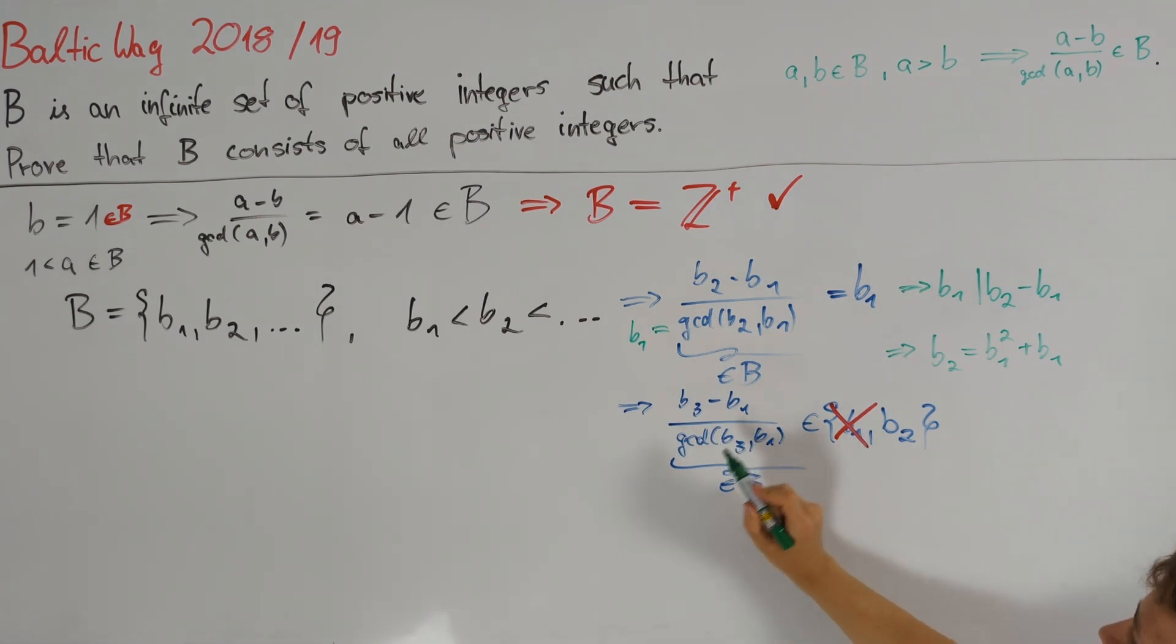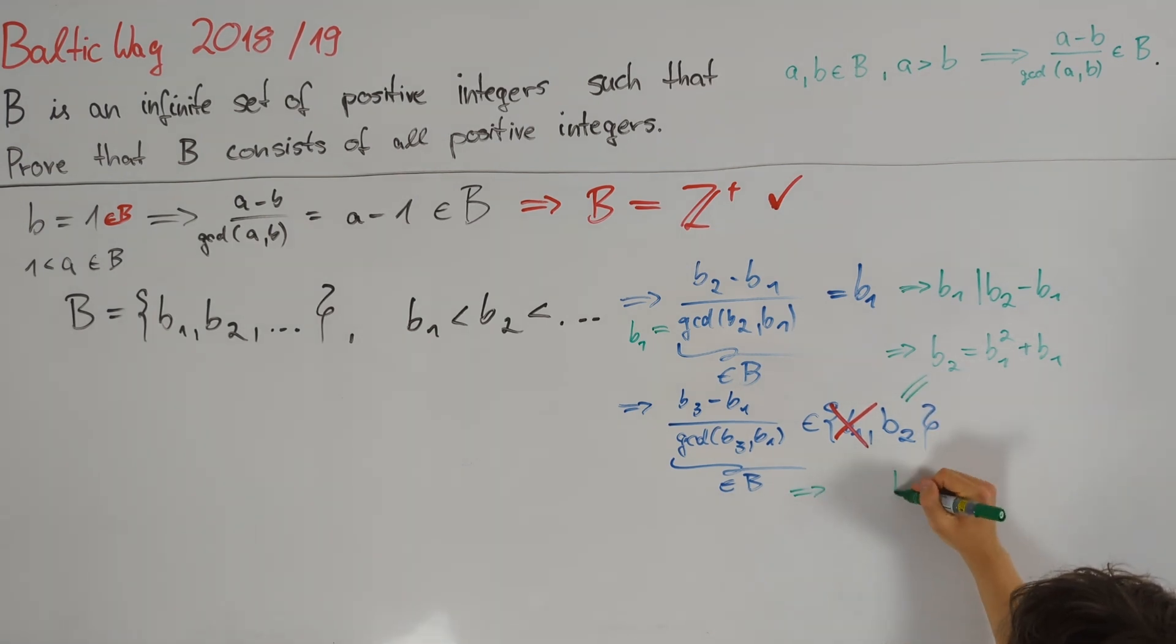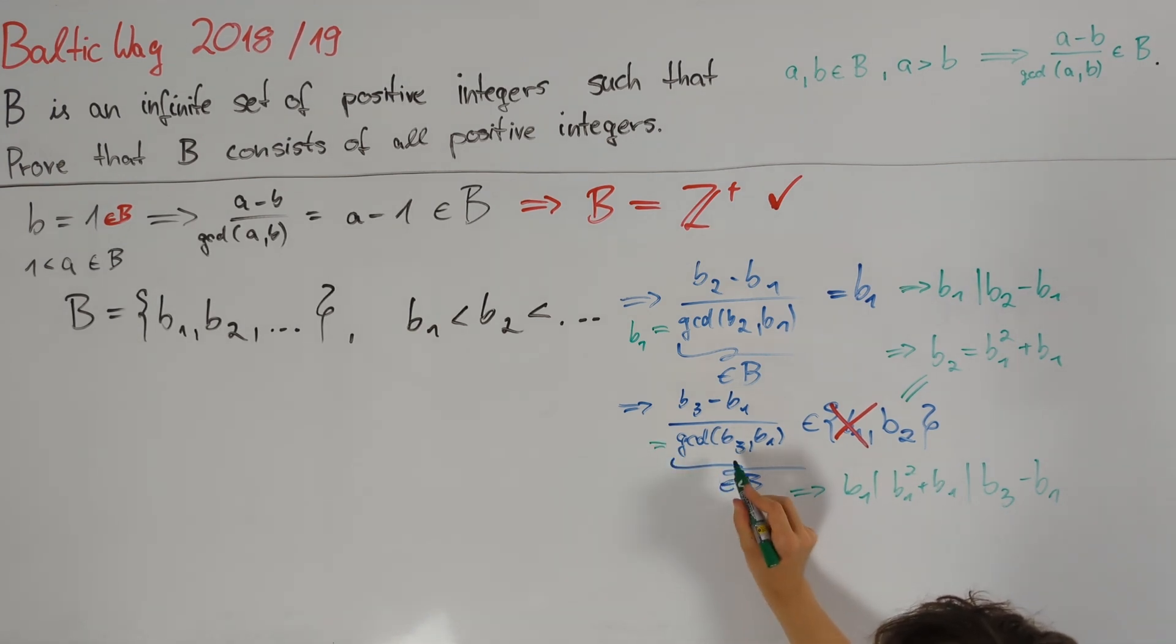Hence, b3 minus b1 divided by the GCD of b3 and b1 is equal to b2, which we already know to be equal to b1 squared plus b1. This implies that b1 squared plus b1 must divide b3 minus b1. Since b1 itself is a divisor of b1 squared plus b1, this also implies that b1 must divide b3, and hence, the greatest common divisor of b3 and b1 is again b1 itself.